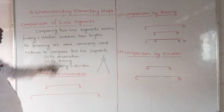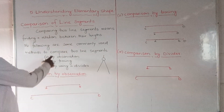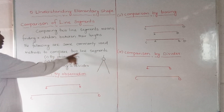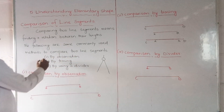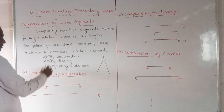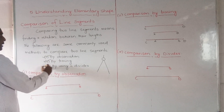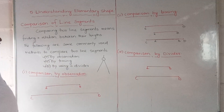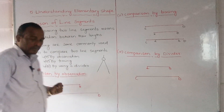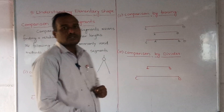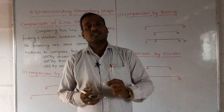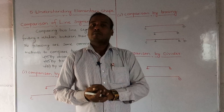The following are some commonly used methods. The common methods to compare two line segments are: by observing, by tracing, and by using the divider. By these three methods we can find out which line segment is greater or which line segment is smaller, very easily.